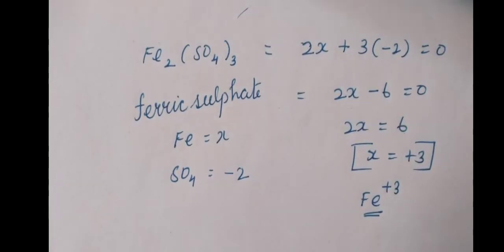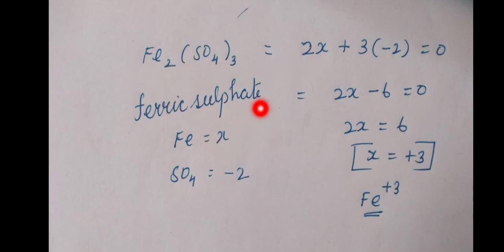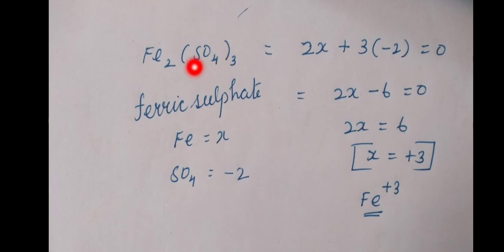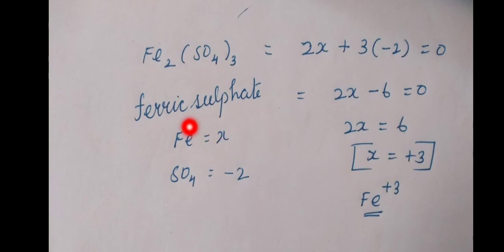Another example: ferric sulfate Fe2(SO4)3. Let Fe = X. Two Fe atoms, so 2X. Three sulfate groups, each with oxidation state -2. Therefore: 2X + 3(-2) = 0 → 2X - 6 = 0 → 2X = 6 → X = +3. Therefore ferric oxidation state is plus three.